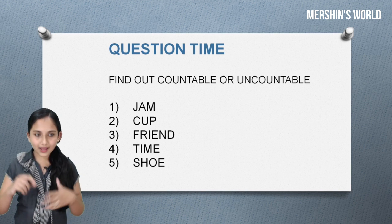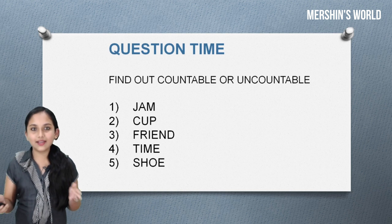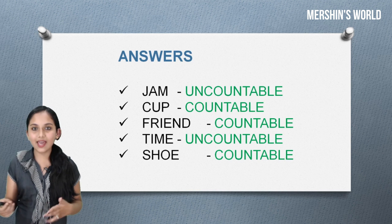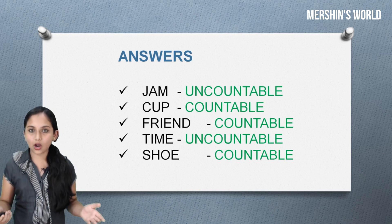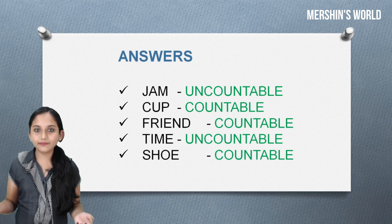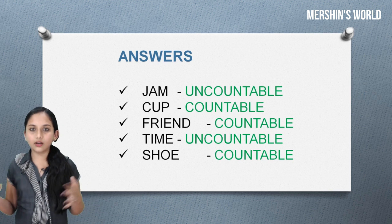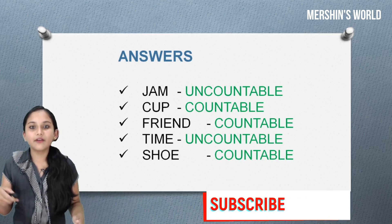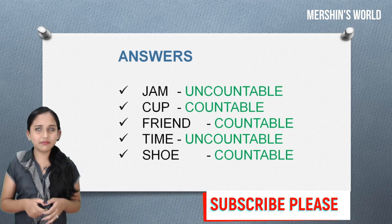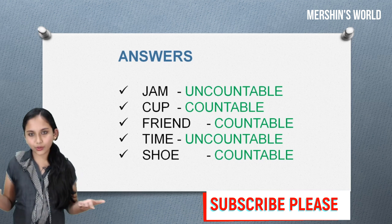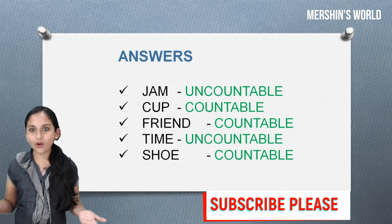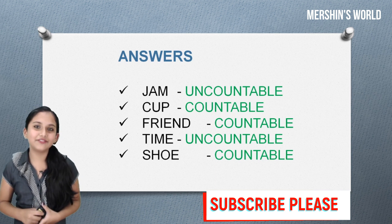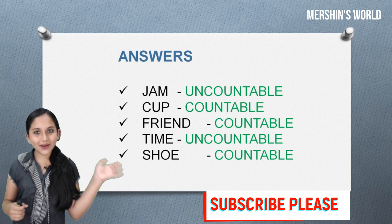If you want, you can pause the video and write your answers in a little note. Now let's check the answers. Jam is uncountable because we can't count jam. Cup is countable because we can obviously count cups. Friend is countable. Time is uncountable. Shoe is countable. Thanks for watching! Please don't forget to subscribe, like, and share if you like it. I'll see you in the next video. Bye.